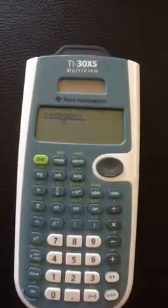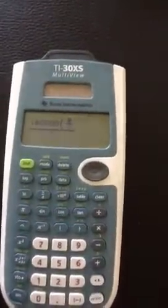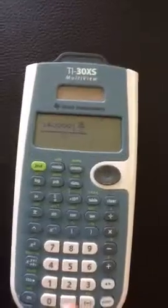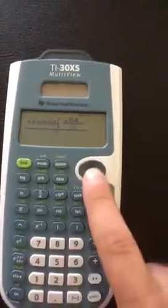Parentheses. Now we want R over N, so we can hit the fraction button again. The R was 0.04. Use the arrow key down.